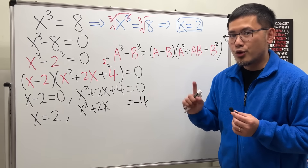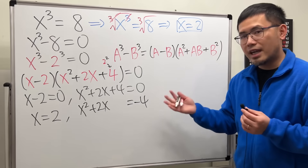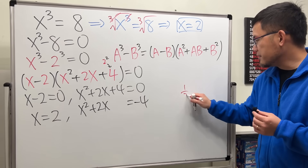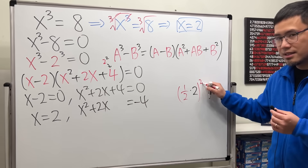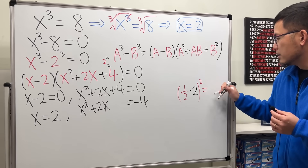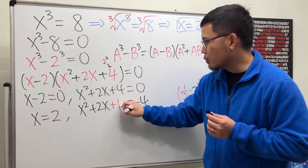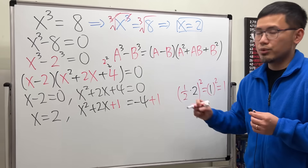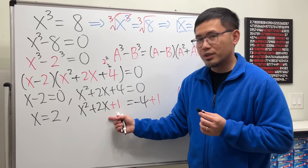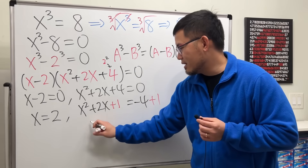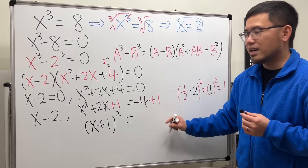To complete the square, take the coefficient of x, which is 2, multiply by one-half and then square it: one-half times 2 is 1, and 1 squared is 1. So we add 1 to both sides. The left side becomes the perfect square x plus 1 squared, and the right side becomes negative 4 plus 1, which equals negative 3.